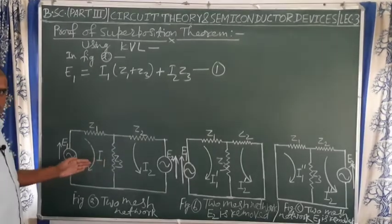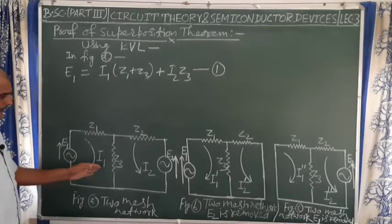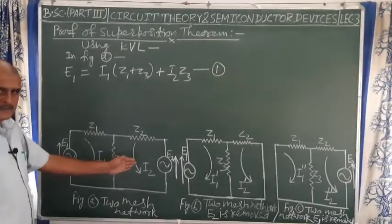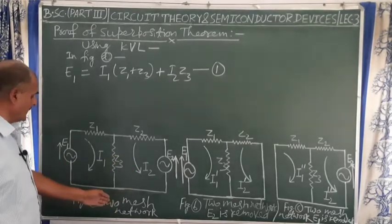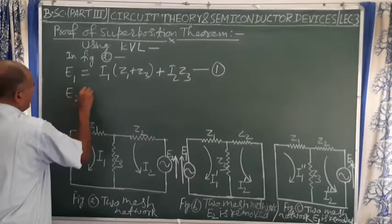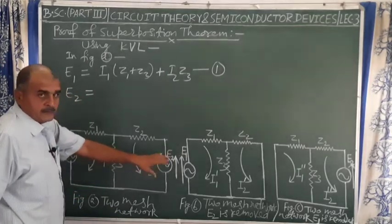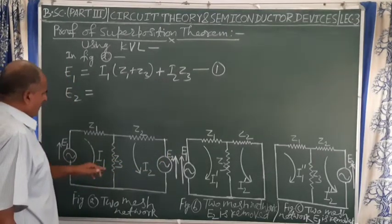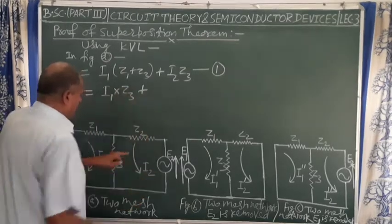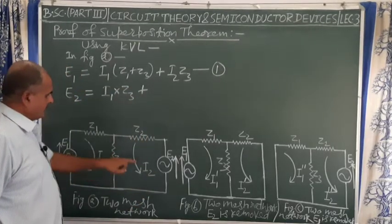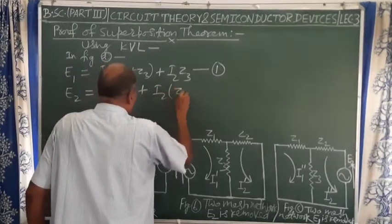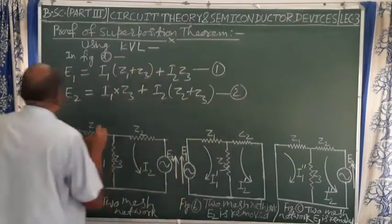Now for the right mesh or right loop of the two-mesh network in figure A, applying KVL we have e2 = i1·z3 + i2·(z2 + z3). This is equation number 2.